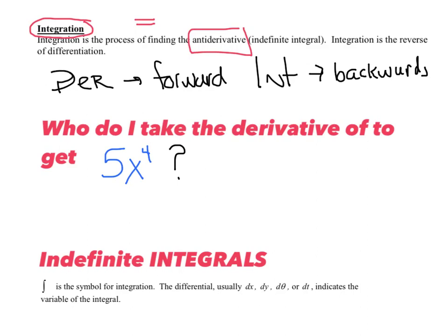So here's a great question to start with: who do I take the derivative of to get 5x to the fourth? My guess is you can come up with that pretty quickly. The derivative of who equals 5x to the fourth? Hopefully by now you've said x to the fifth is your answer. And if you did, you've just integrated — you've worked backwards.